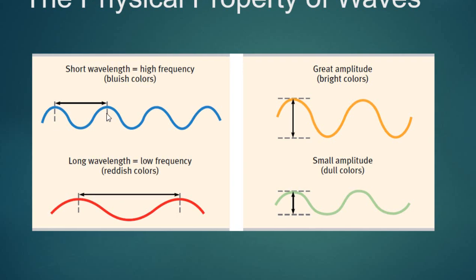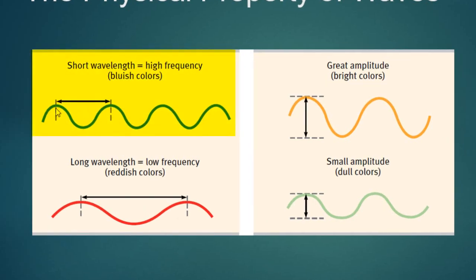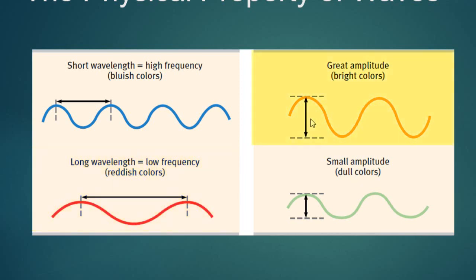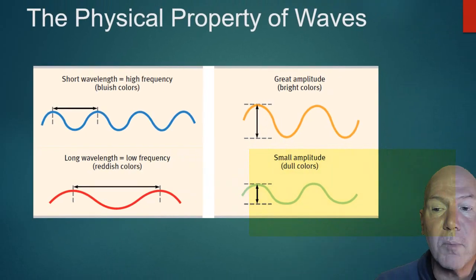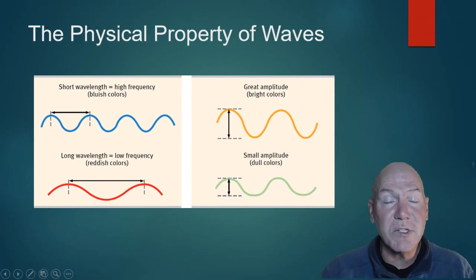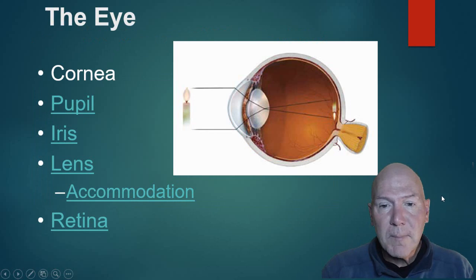Wavelength is from peak to peak of a wave — the distance between peaks dictates which color we see. High frequency means waves are close together, and we perceive that as blue. A long wavelength means we perceive red colors. The amplitude is from the base to the top: the larger the amplitude, the brighter the color we perceive; a smaller amplitude means we see duller colors. All of this goes together for our brain to determine what we're seeing.